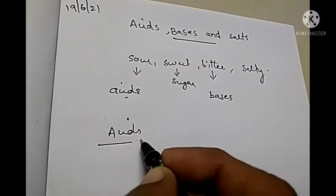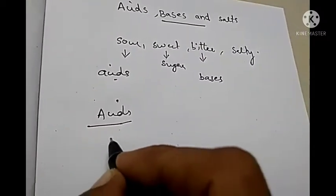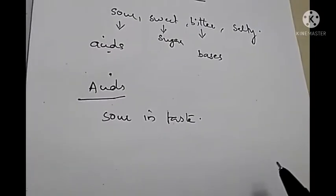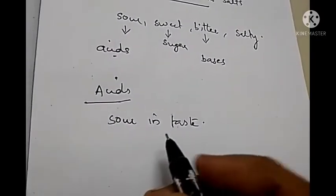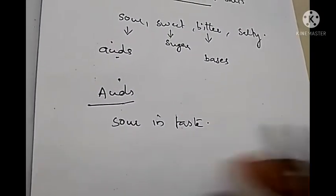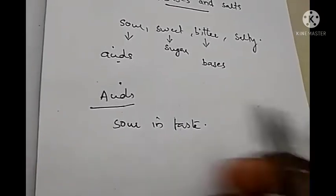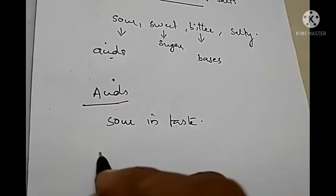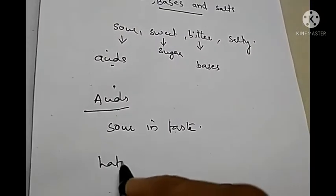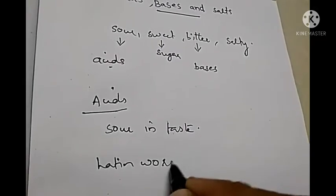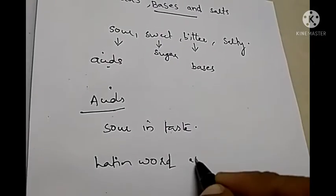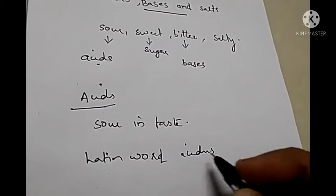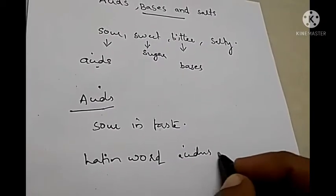We have studied that acids are the substances which are sour in taste. Acids are sour in taste. Now, this word 'acid' came from a Latin word 'acidus'. The meaning of this Latin word 'acidus' is sour.